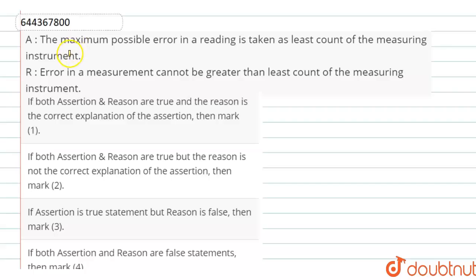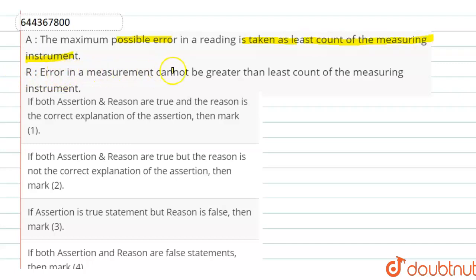Hello dear students, here is an assertion and reason type of question. The statement of assertion is: the maximum possible error in a reading is taken as the least count of the measuring instrument. And the reason is: error in the measurement cannot be greater than the least count of the measuring instrument.